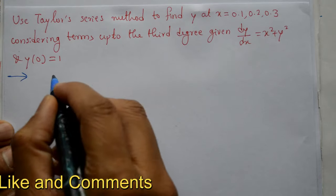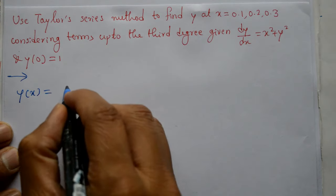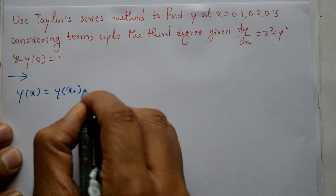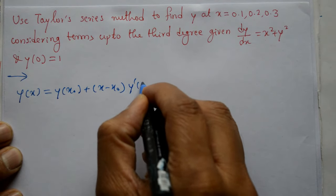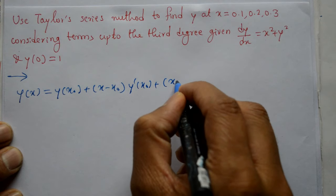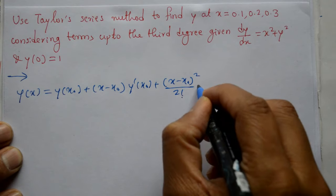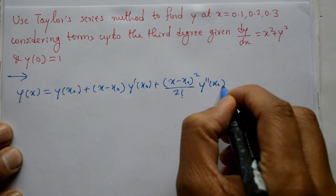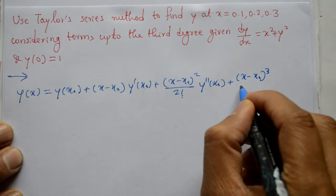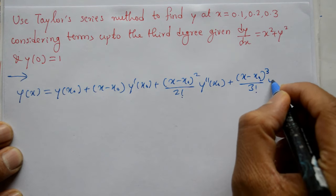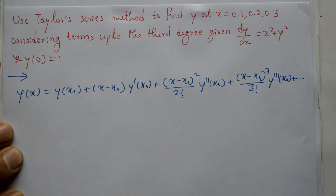The Taylor series expansion of y(x) is given like this: y(x) = y(x₀) + (x − x₀)·y'(x₀) + (x − x₀)²/2! · y''(x₀) + (x − x₀)³/3! · y'''(x₀) + so on — an infinite series.